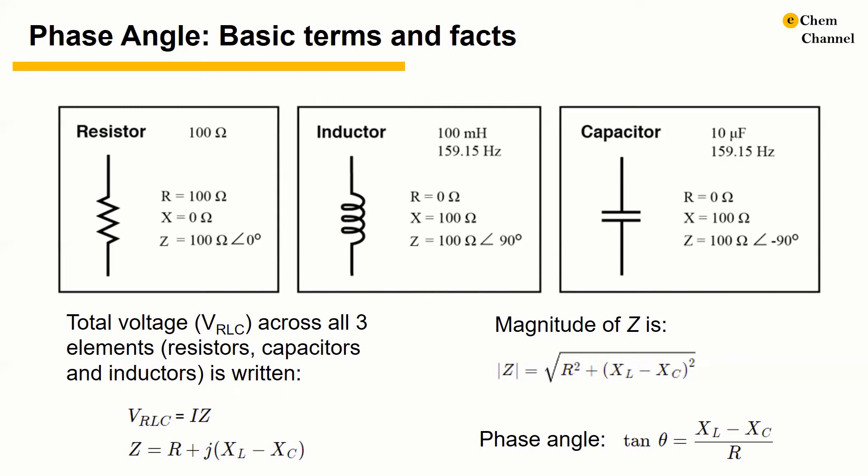So when an alternating current goes through an impedance, a voltage drop is produced that is somewhere between 0 to 90 degrees out of phase with the current.